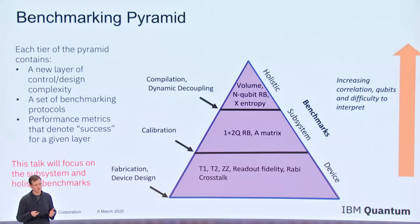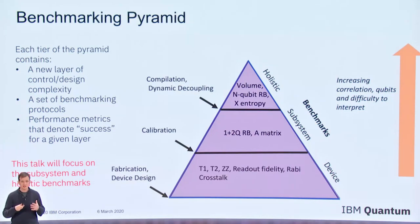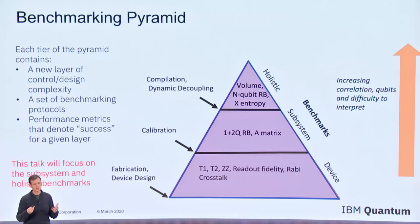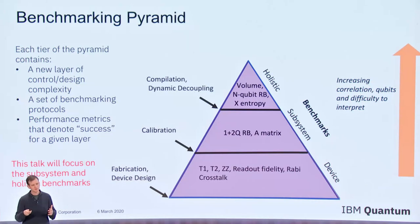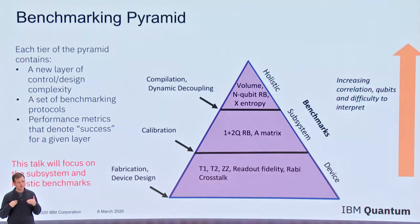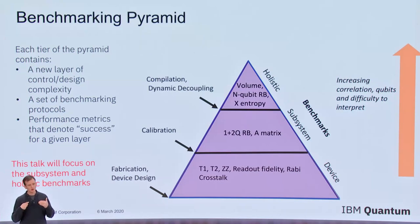We visualize our benchmarking efforts through this pyramid structure where at the bottom we have things like the device specification. There we have a lot of information that we gather about the device, but it's very individualized — things like the coherence properties of the individual qubits, the frequencies, things that are mainly static about the device and set mainly through fabrication and device design. As we move up this pyramid, the benchmarking information involves more and more qubits and becomes more complex, but tells us more about the holistic nature of the device.